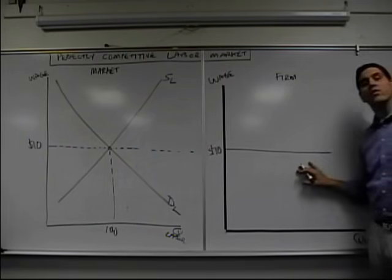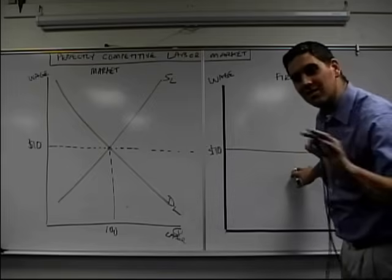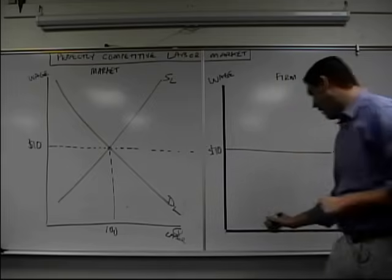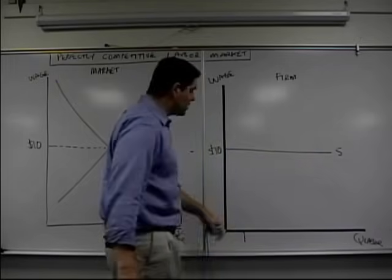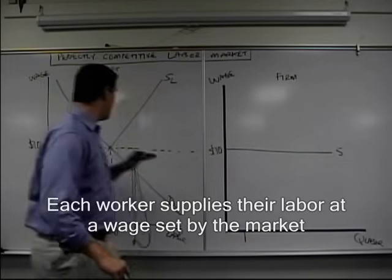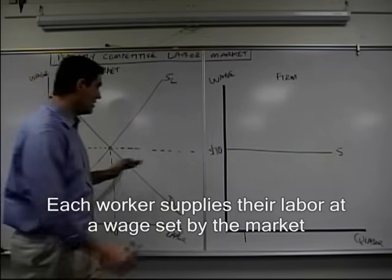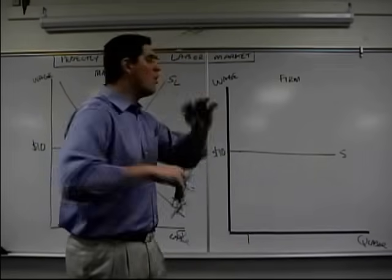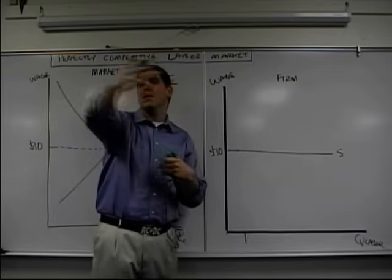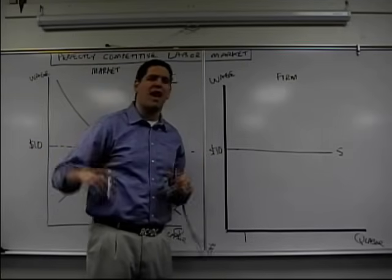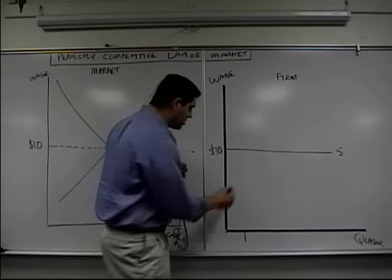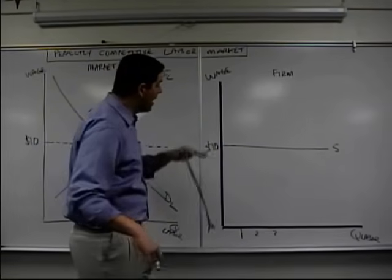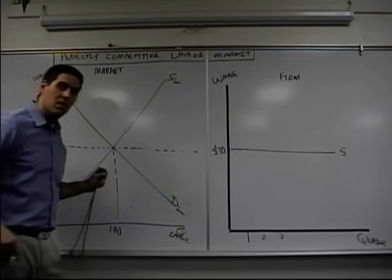This is not the demand curve. In a perfectly competitive product market, this was a demand curve. Now it's something different, it's supply. Here's why. For this first worker, how much are they willing to sell their labor for? Well, they can only sell their labor for the wage that's set by the market. This guy can sell his labor for $10. Why can't he sell his labor for $20? Well, if he says, hey, I'm only going to work for $20, the firm's going to be like, I can hire anybody else for $10, why am I going to hire you for $20? So everyone's forced, this first worker, second worker, third worker, they're all forced to sell their labor and supply their labor at a wage that's set by the market.